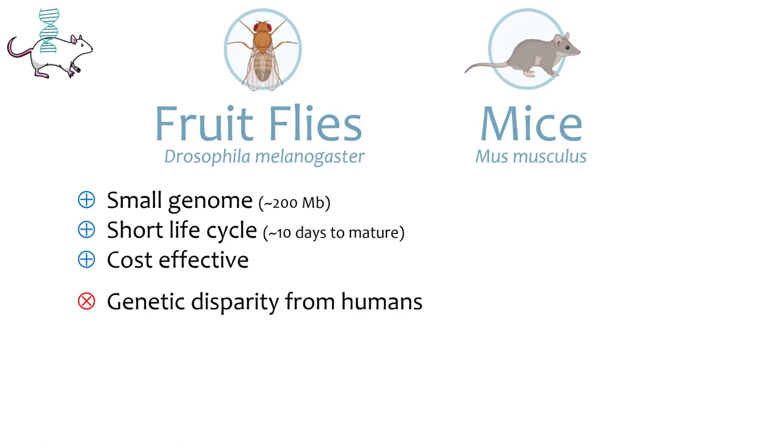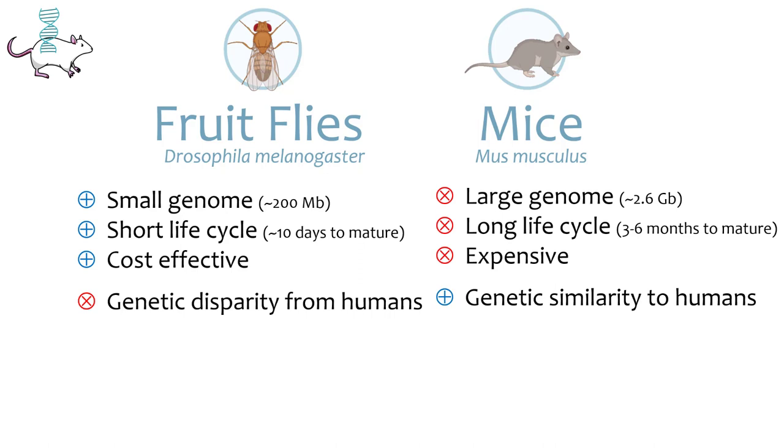Mice are commonly used to study many aspects of human physiology, including circadian disorders. However, the much longer life cycle, more complicated genome, and greater resources required to keep and study mice rather than flies means significantly higher costs and longer experiments. The physiological and genomic similarities of mice with humans make mice a model that can provide us with data that might more accurately reflect the human system.